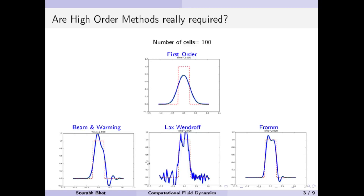On the other hand, higher order methods give a very, very bad solution — totally full of oscillations — and these oscillations are obviously not acceptable. Even such oscillations are not acceptable as part of the solution.